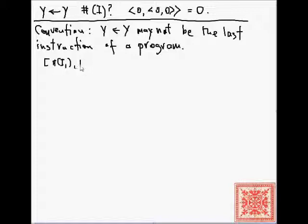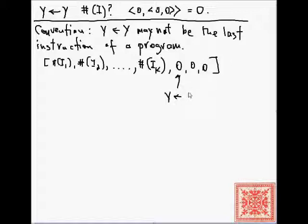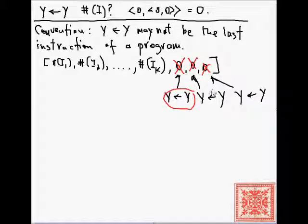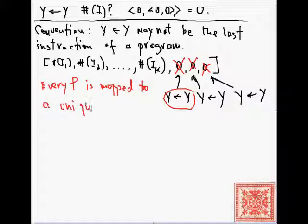In other words, if we have a program with a Gödel number, where this is the number of the first instruction, the number of the second instruction, and the number of instruction k — padding it with zeros (which are the numbers of y → y instructions) will not be permitted. There is no loss of generality here because y → y does not change the behavior of the program, but this convention allows us to state that every program P is mapped to a unique natural number.